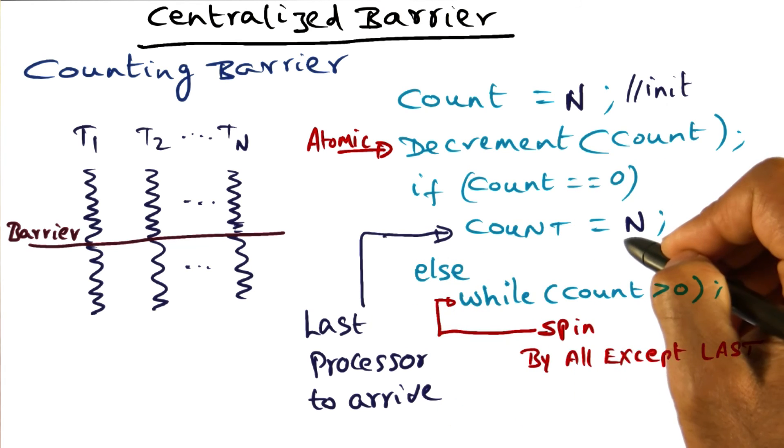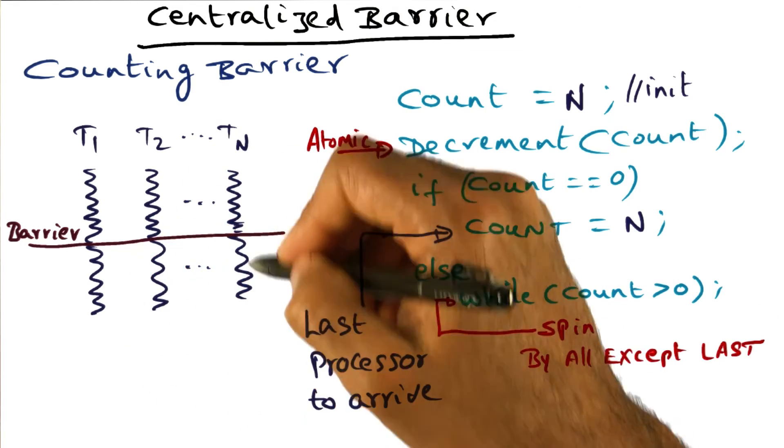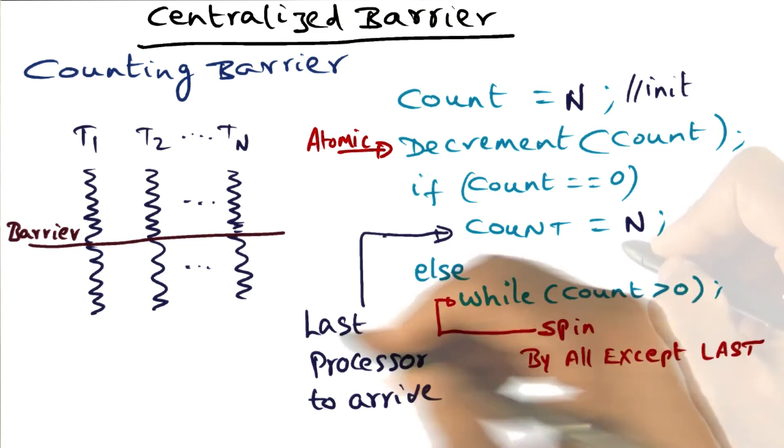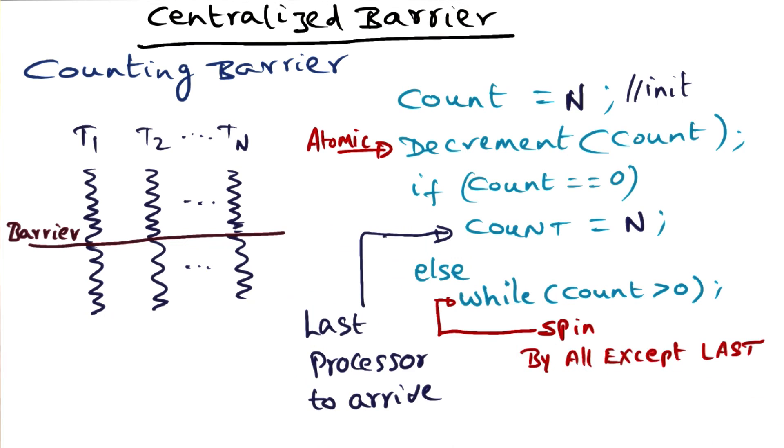Then the last processor is going to reset this count to N, so that all these guys are now on the way to the next barrier. It is resetting it to N so that the barrier can be executed again when all these guys get to the next barrier. That's the idea behind the centralized barrier.